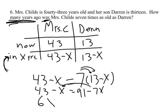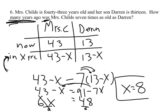So we get 6X equals — I'm going to take away 43 from both sides: 91 take away 43. That's the same as 90 take away 42. 90 take away 40 is 50, but I need to steal a little bit from that, so I get 48. Divide both sides by the numerical coefficient to just get X: 48 divided by 6 is 8, so X equals 8. So 8 years ago is when Mrs. Childs was seven times as old as Darren.